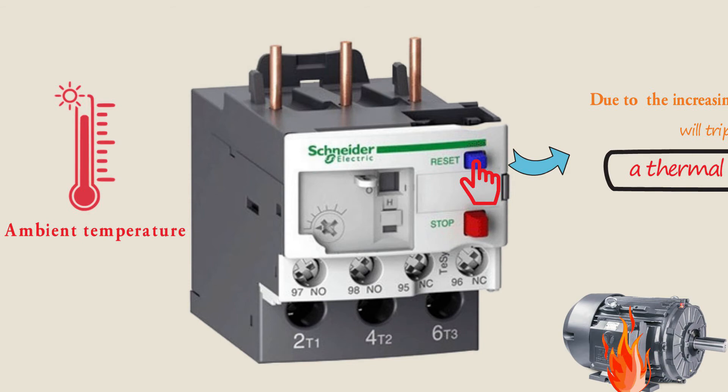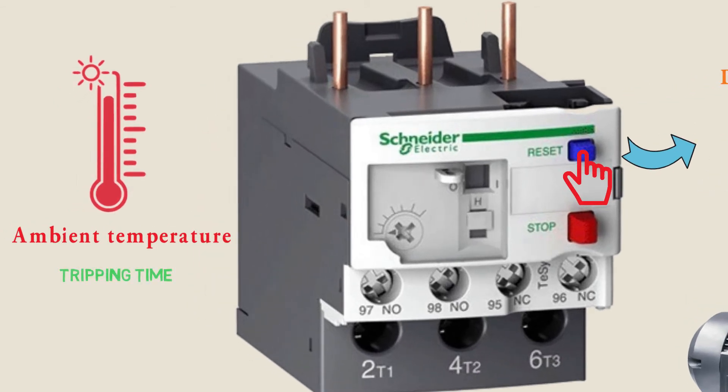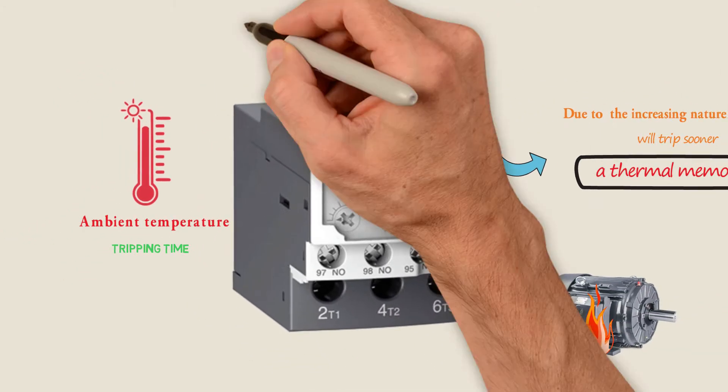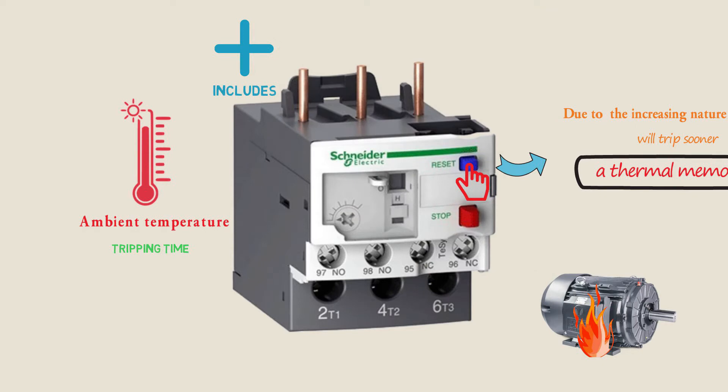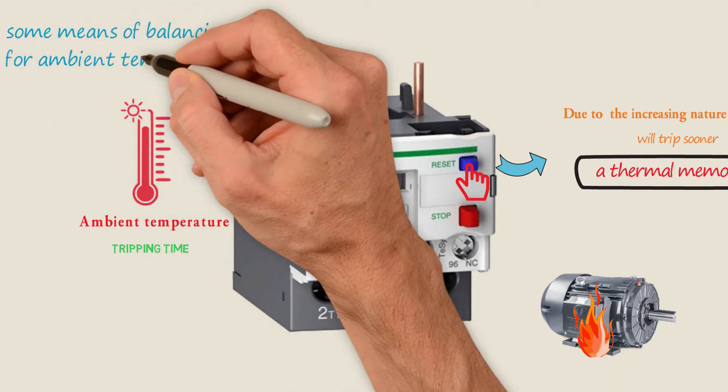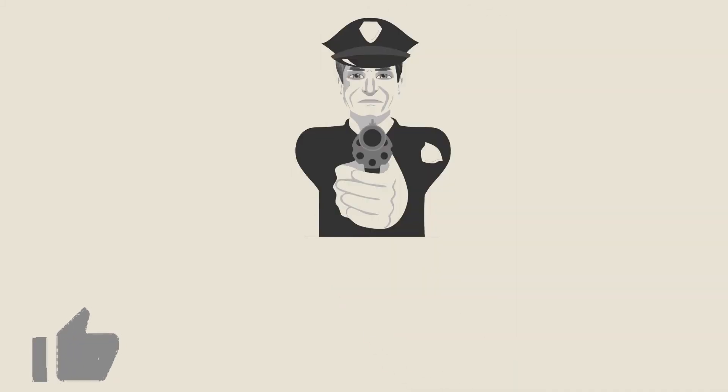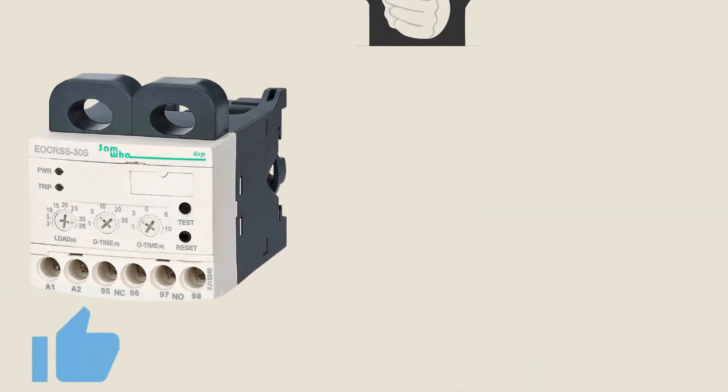Ambient temperature can greatly affect the tripping time of the thermal overload relay, unless the overload includes some means of balancing for ambient temperature. Man, don't run away and tell me what is this?